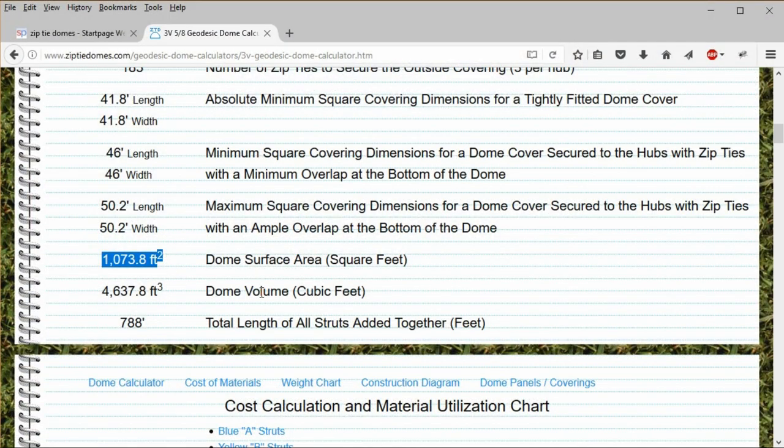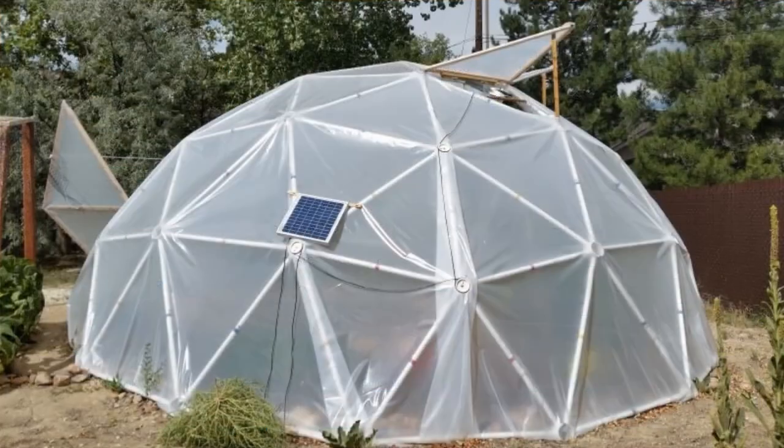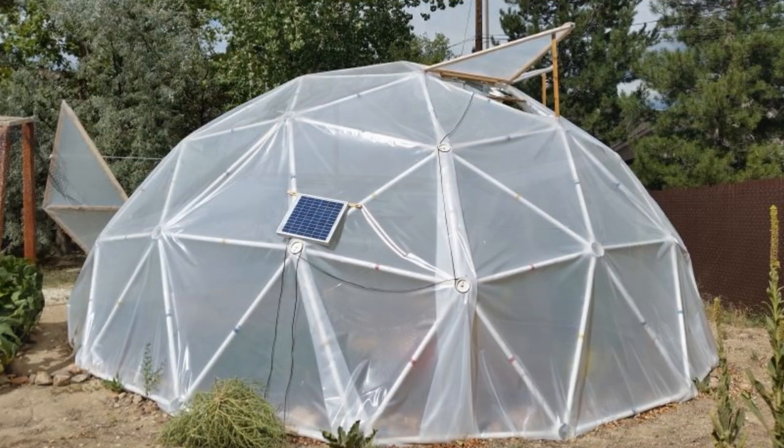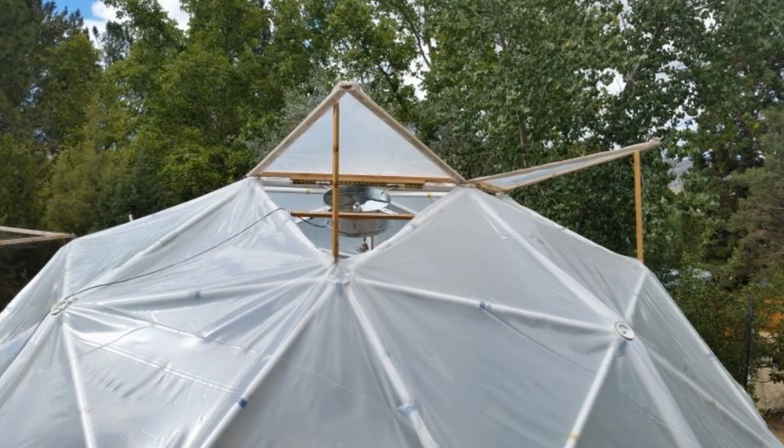The dome covering will create a surface area of 1,073.8 square feet and the dome will enclose a volume of 4,637 cubic feet of air. The dome volume is useful for determining the size of the fan needed to ventilate a geodesic greenhouse.